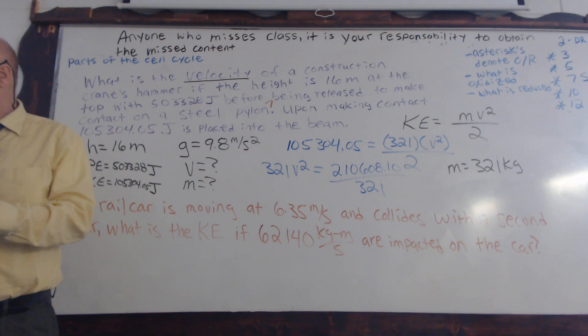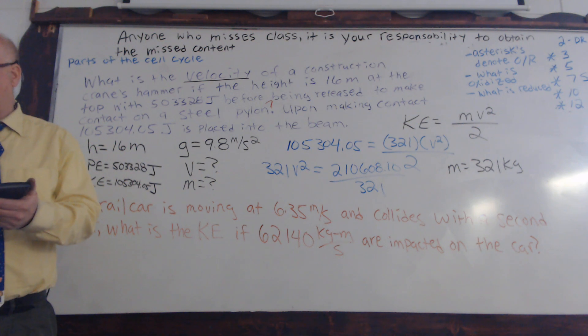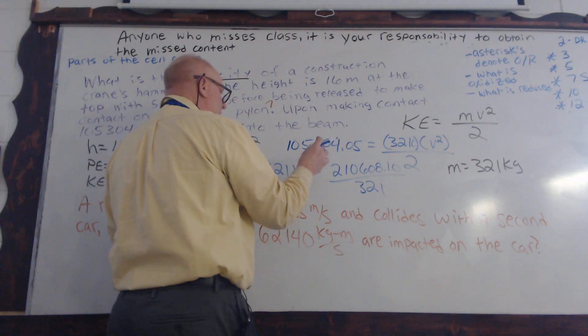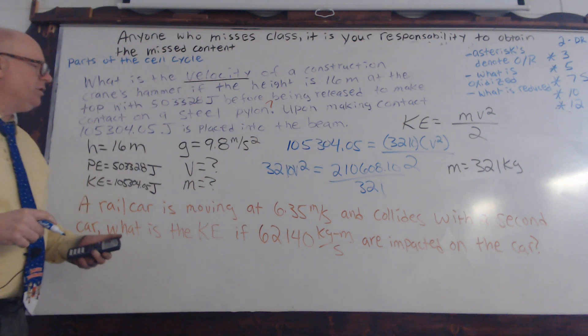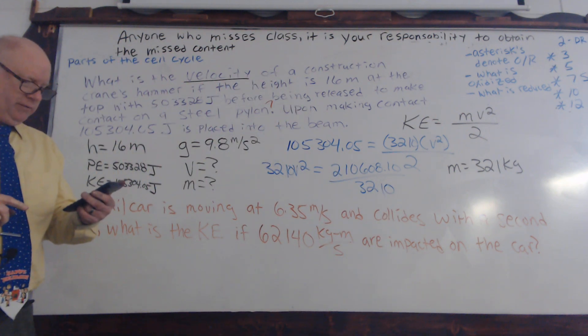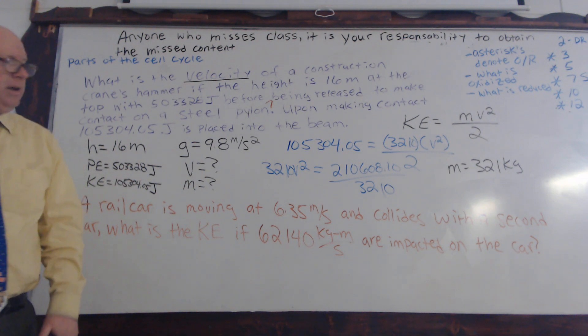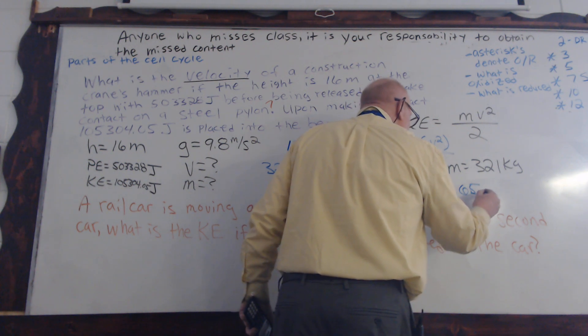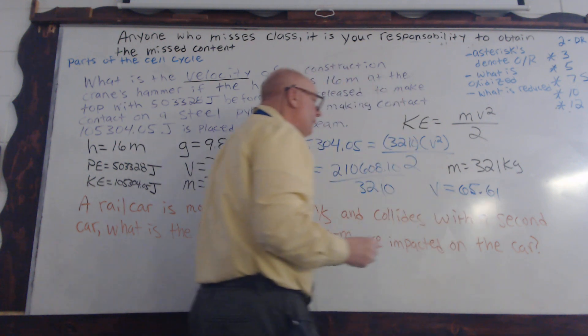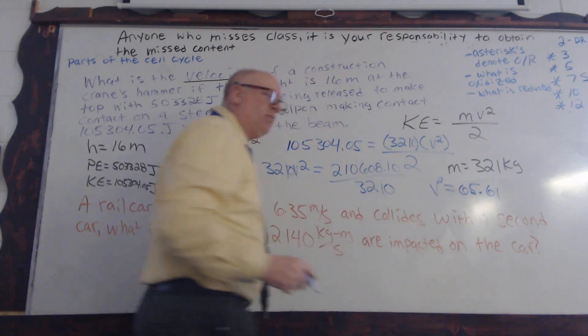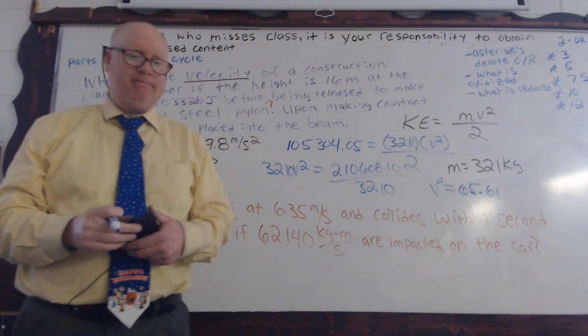Okay, so upon doing this, we're going to divide that by 3,210, and that gives you 65.61. Does that mean we're done? There's one more step. What is that? Because this is squared, so you should get somewhere around 8.1. That's what we're looking for.